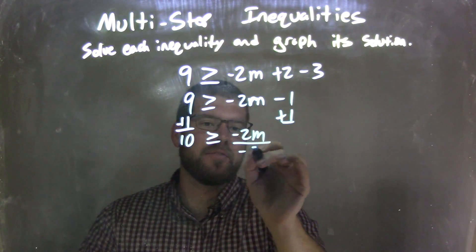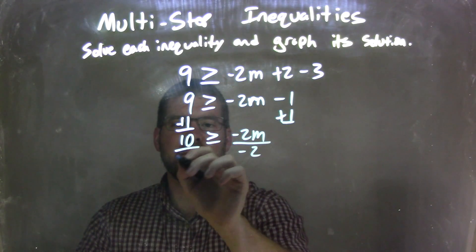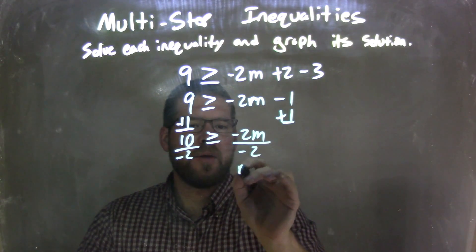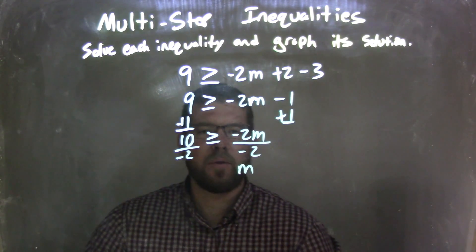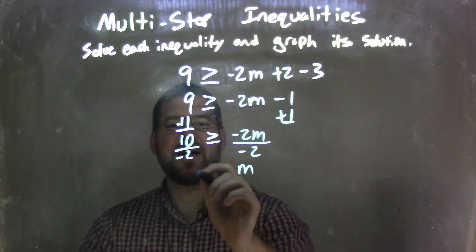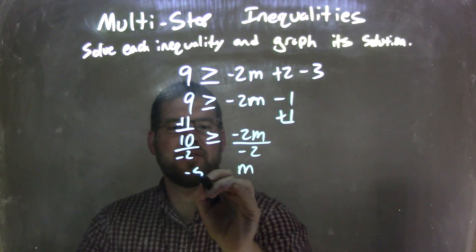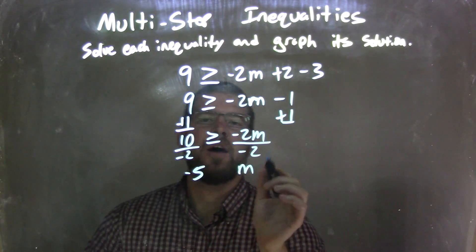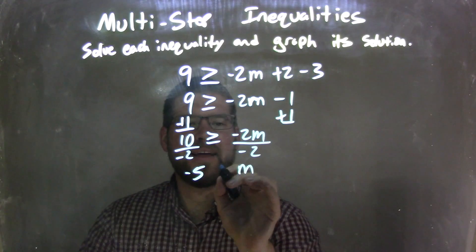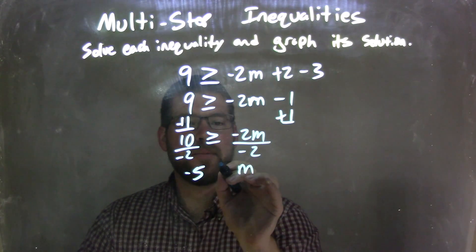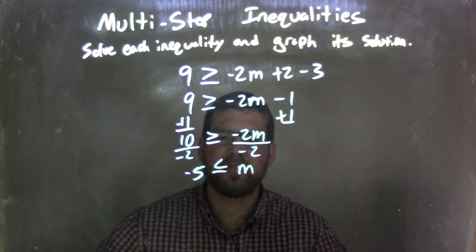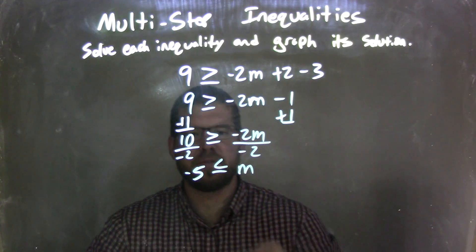I then divide both sides by negative 2, leaving me with m on the right and 10 divided by negative 2, which is negative 5, on the left. But remember, when we divide by a negative over an inequality, that inequality needs to flip — so the greater than or equal to sign turns into a less than or equal to sign.